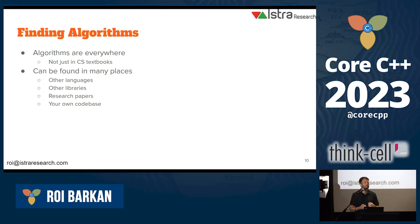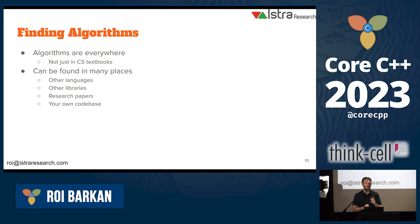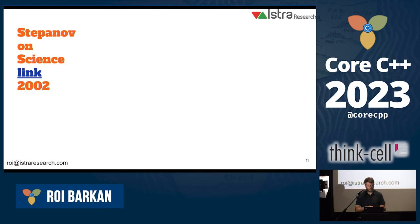Where do we find algorithms? The key observation is that algorithms are everywhere — not just in textbooks. We can find good algorithms in other languages, other libraries, in academic and research papers. But really, we can also look in our own codebases — we already have algorithms hiding there, and if we know to look for them, they can be a good launching pad for thinking about our code as libraries.